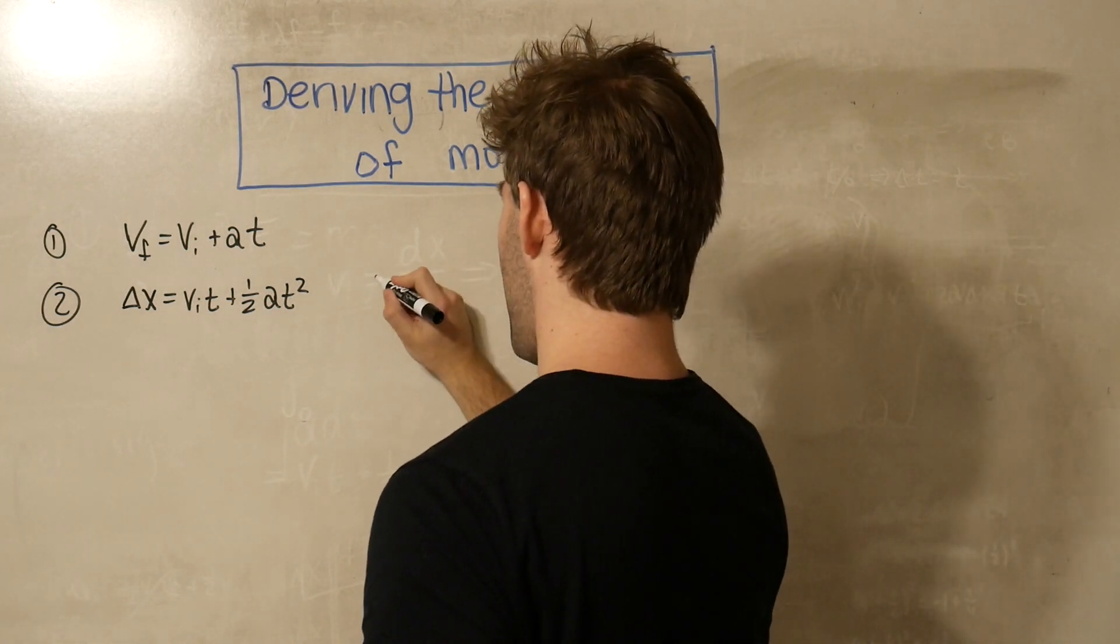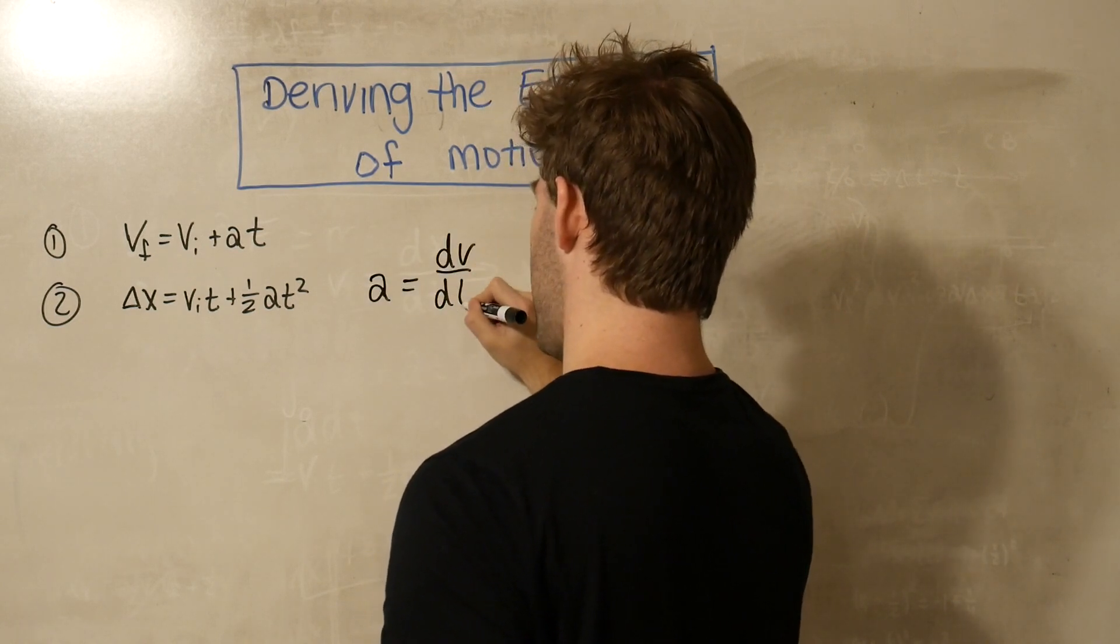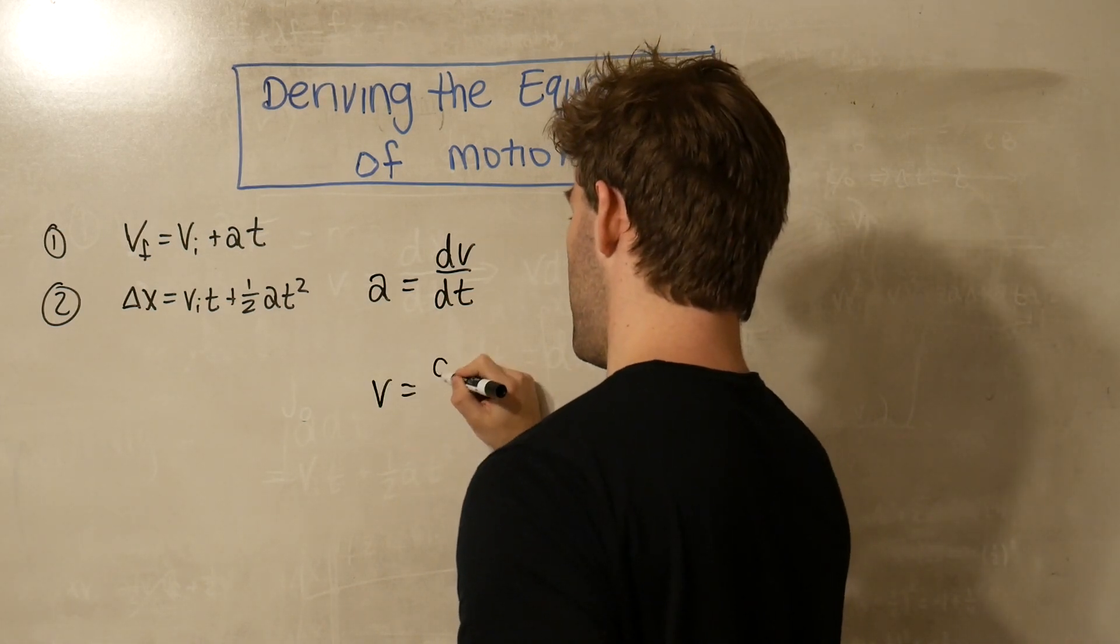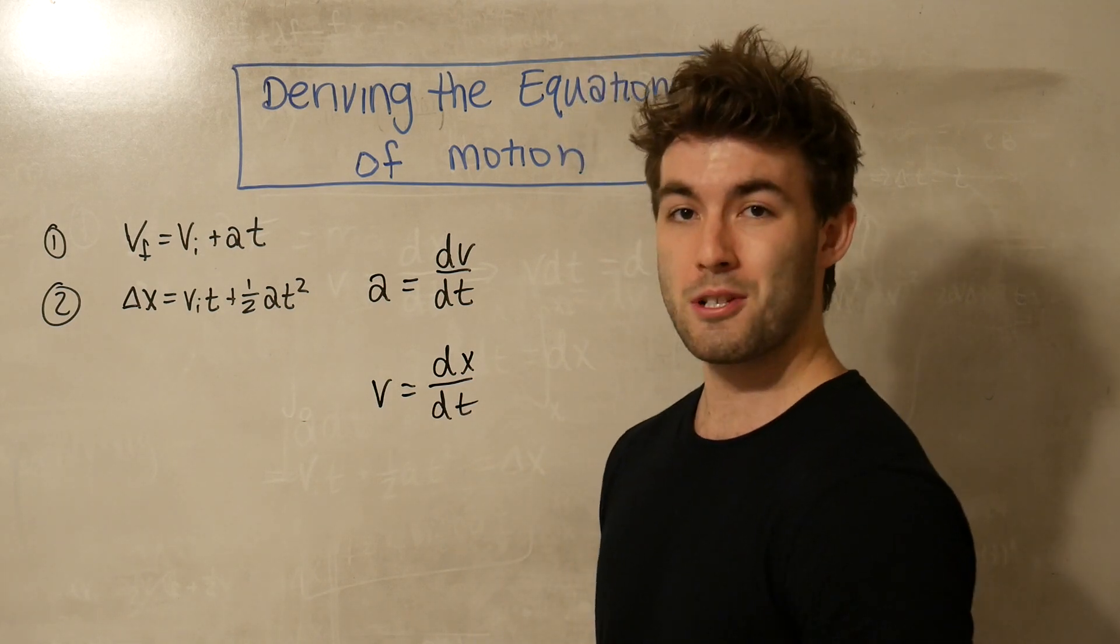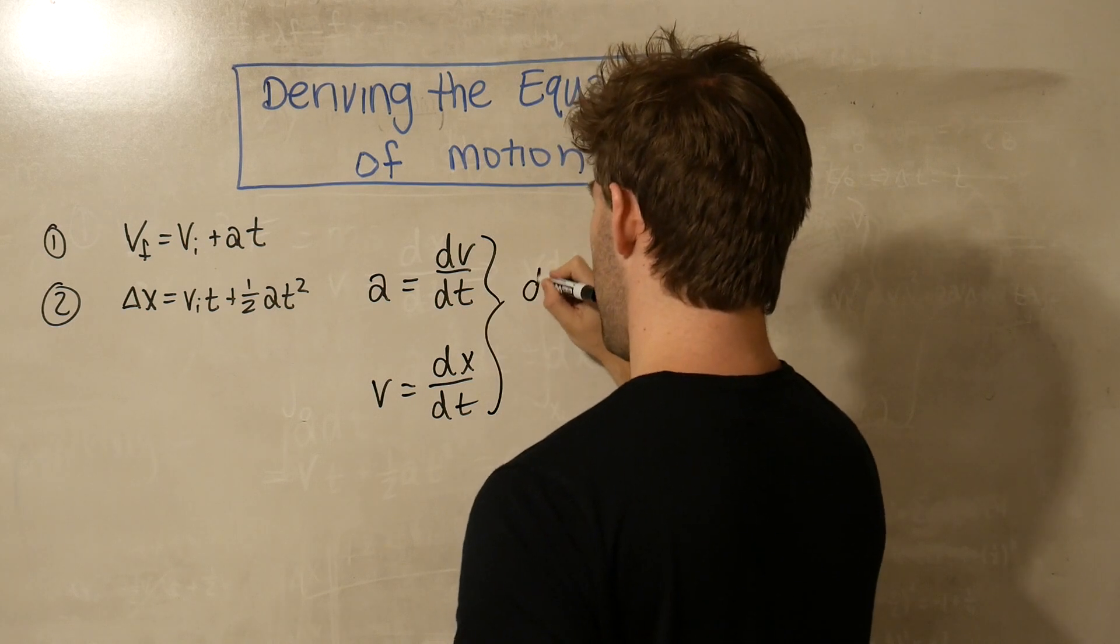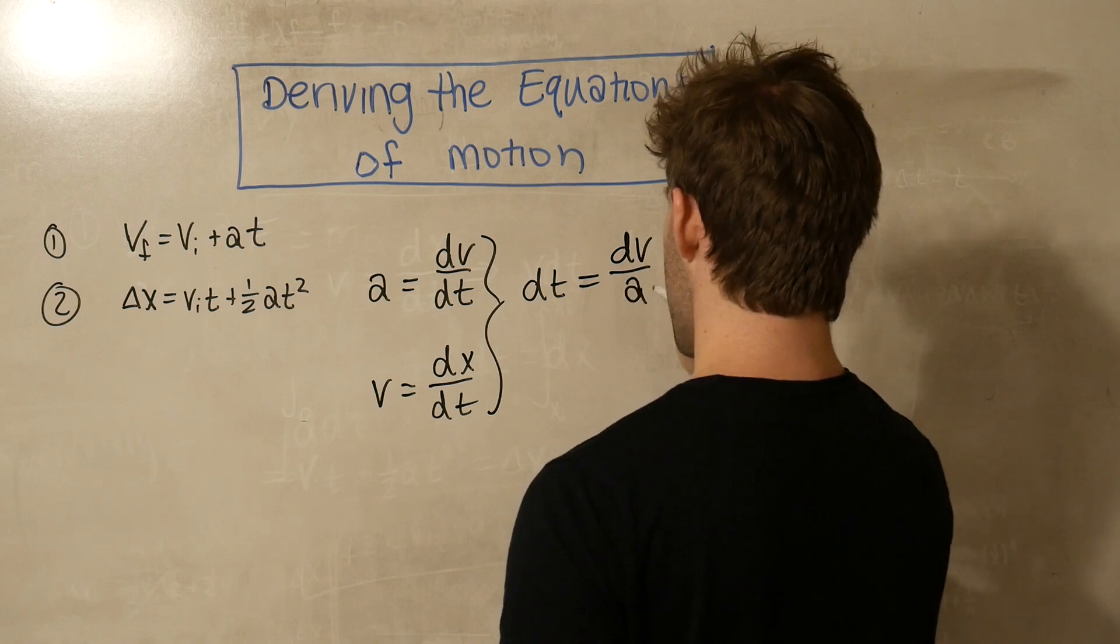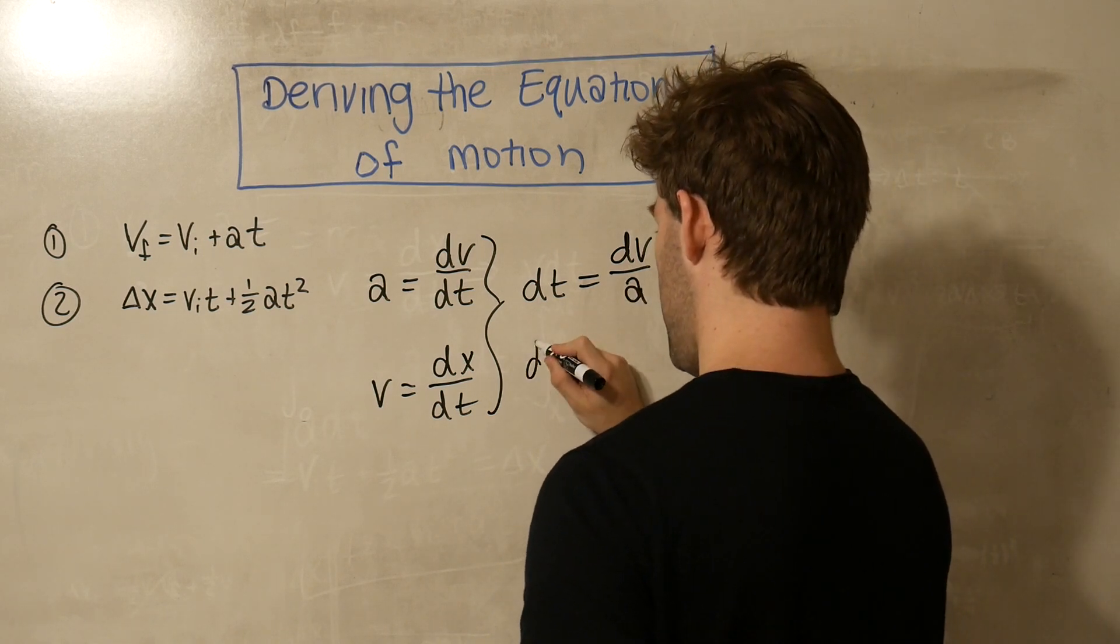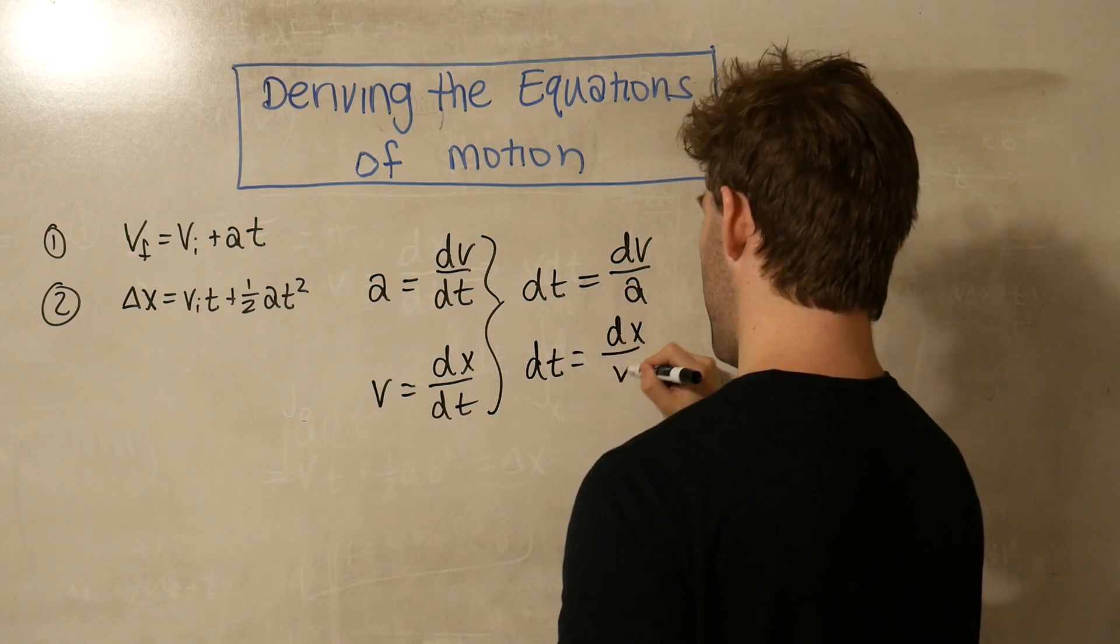We know that acceleration is equal to the change in velocity with respect to time. And we also know that velocity is equal to a change in position with respect to time. Now if we solve for dt in both cases, we get that dt is equal to dv over a. And we get that dt is also equal to dx over v.